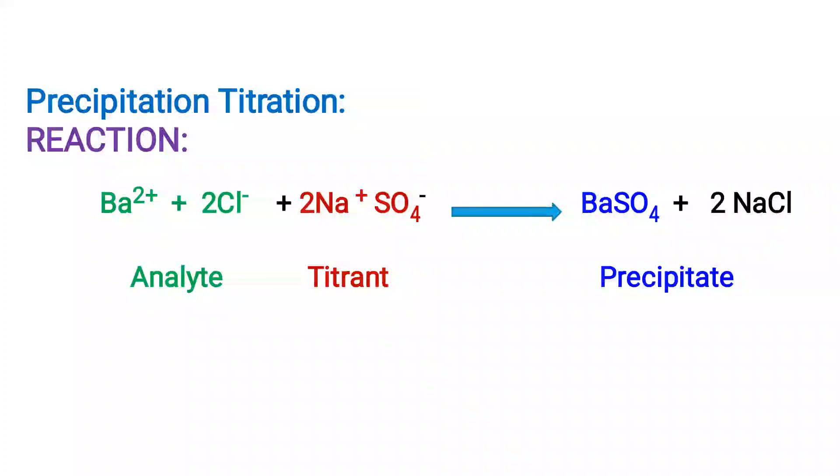Barium chloride is an analyte which is taken in the beaker and sodium sulfate is titrant which is taken in the burette. Barium sulfate is sparingly soluble salt. It does not dissociate. Na+ and Cl- ions have low ionic conductivity compared to Ba2+.